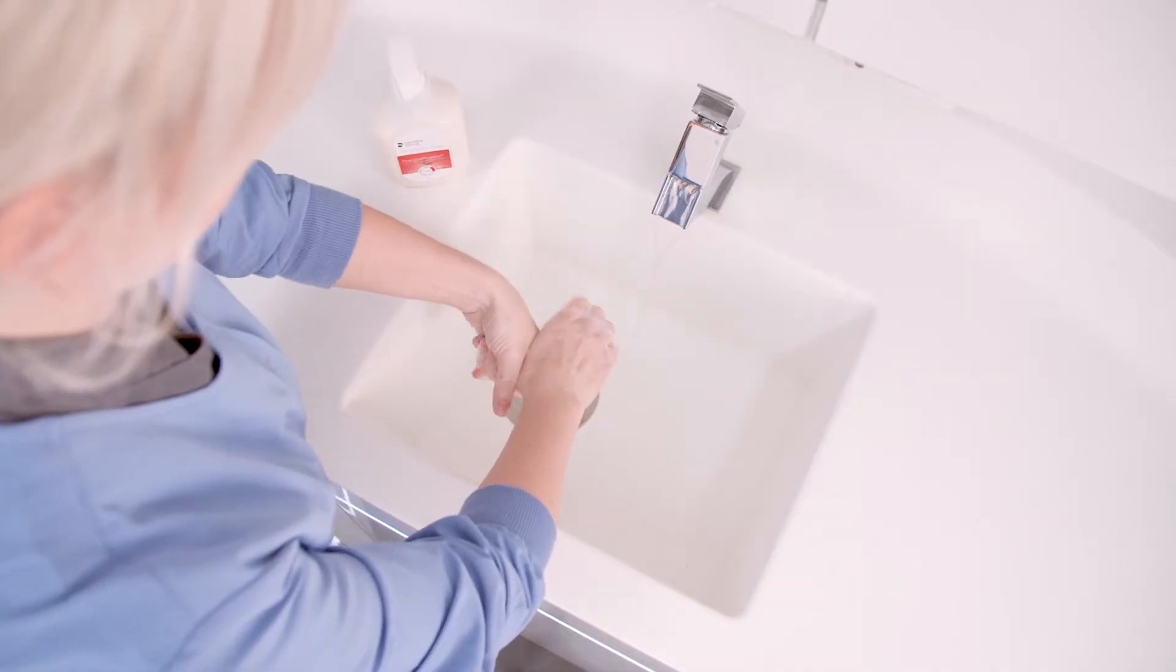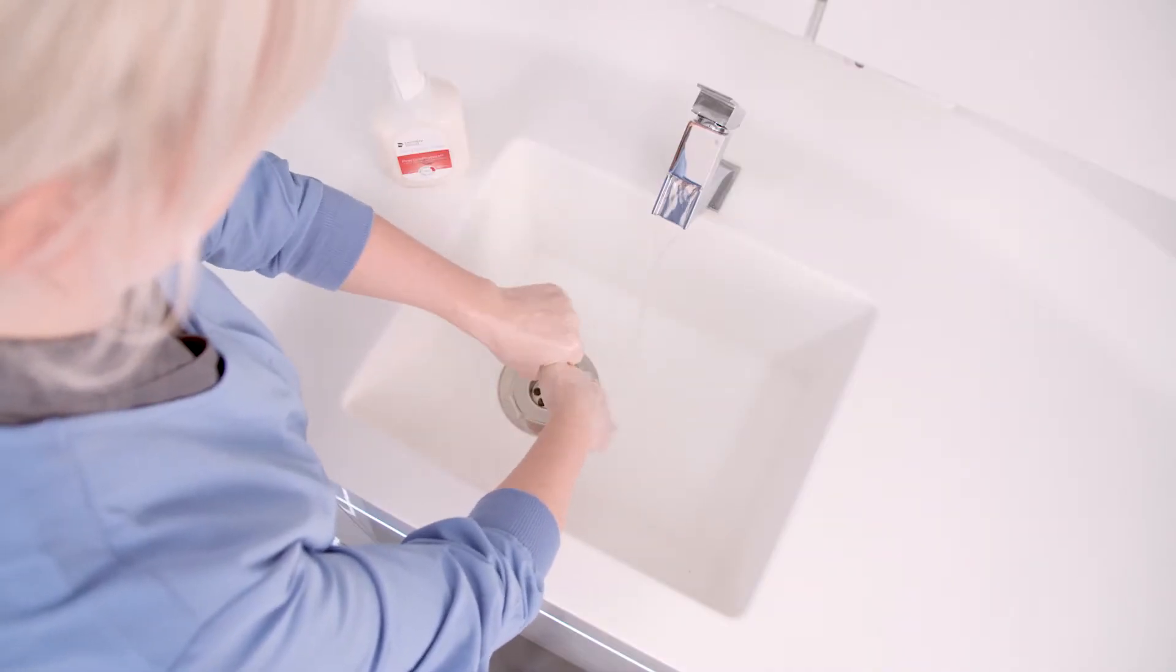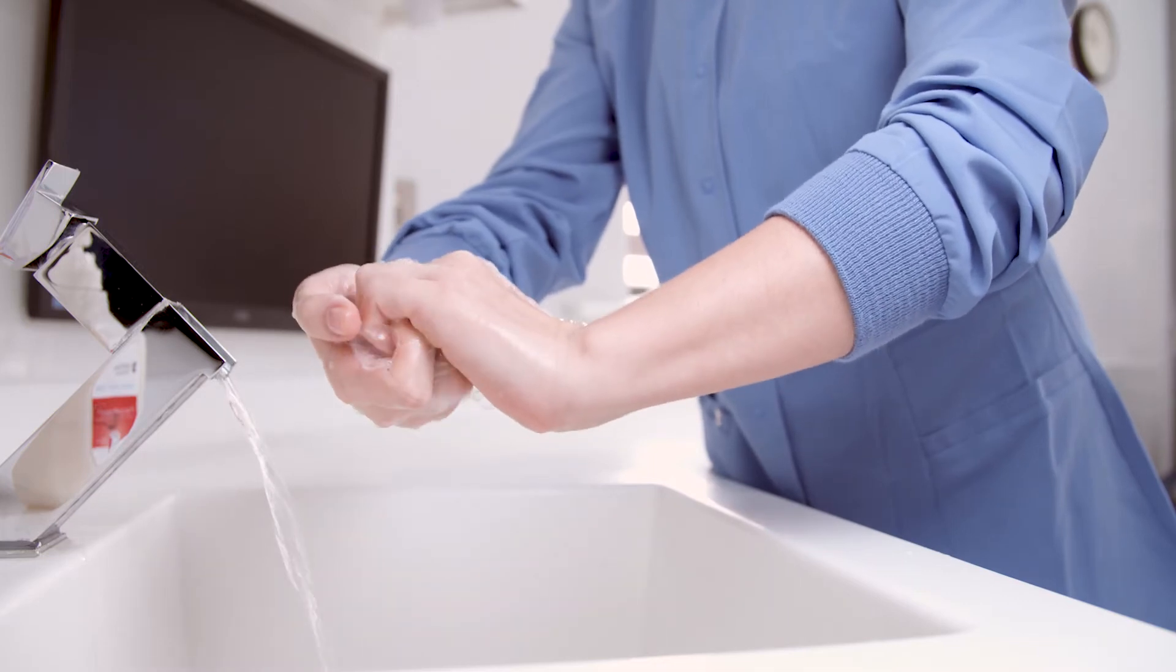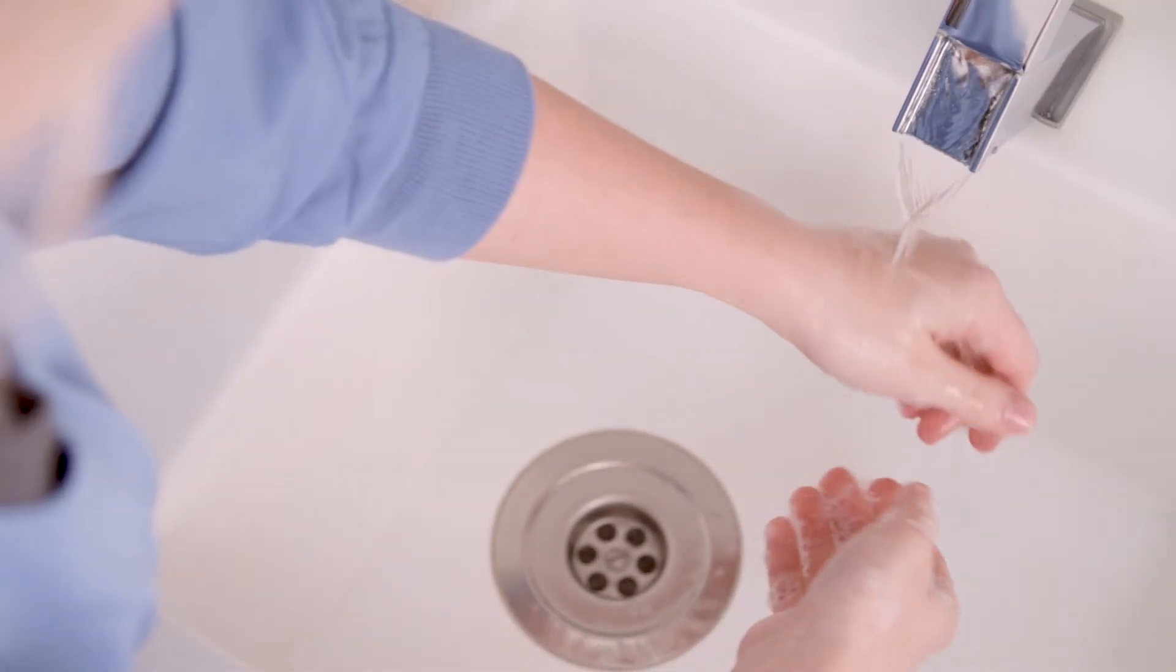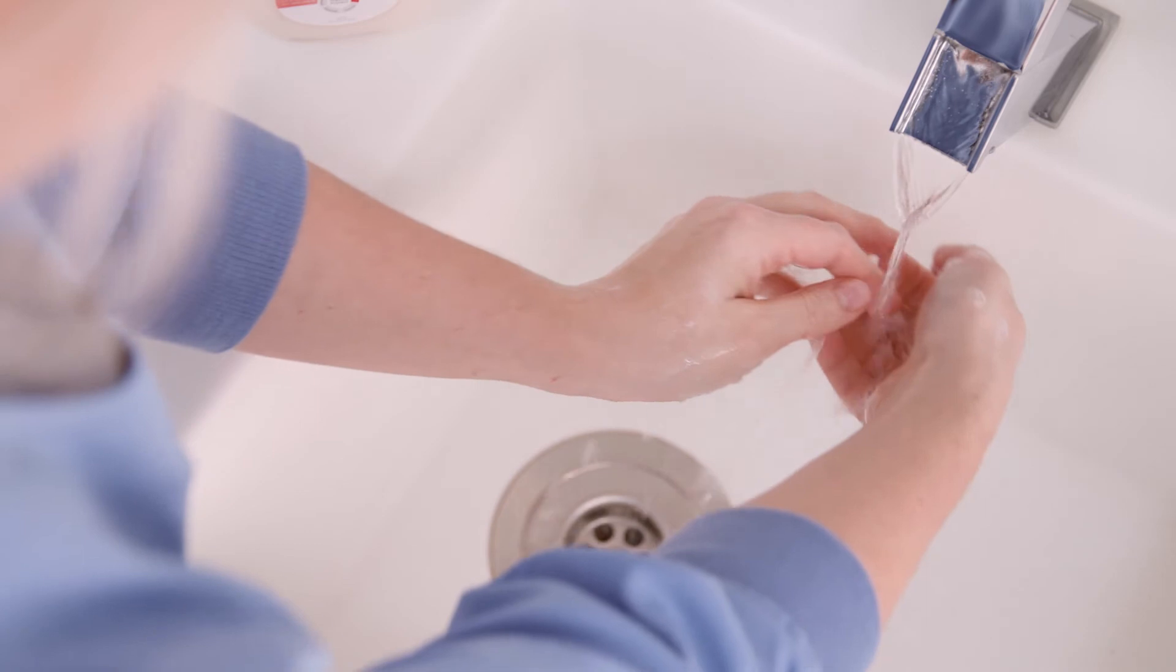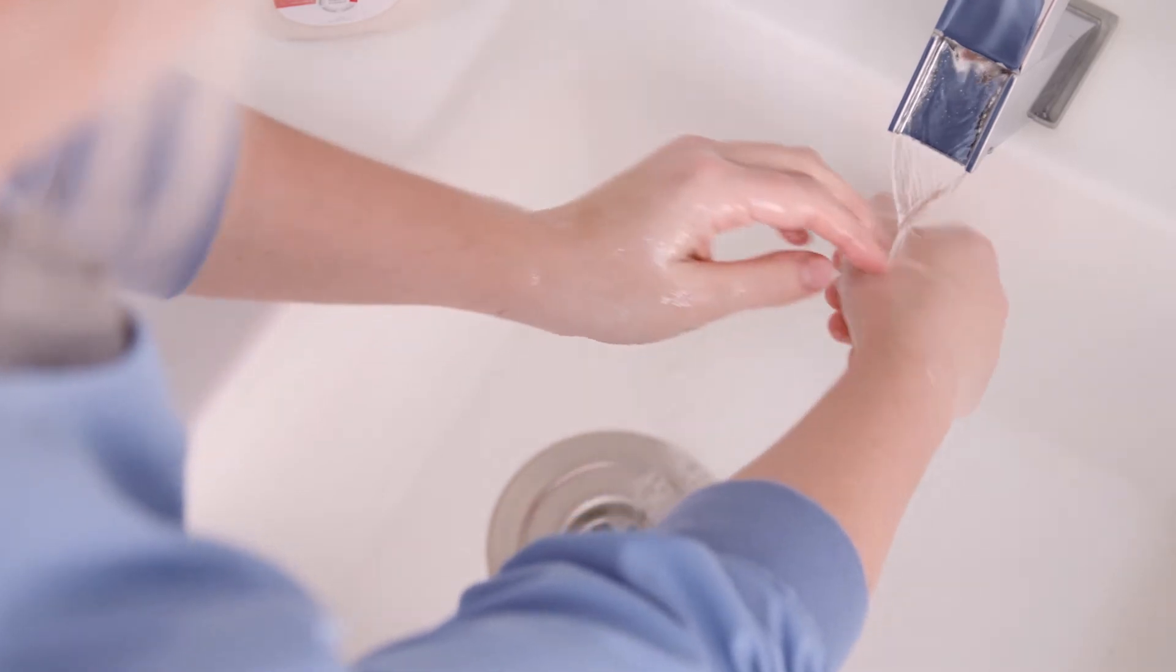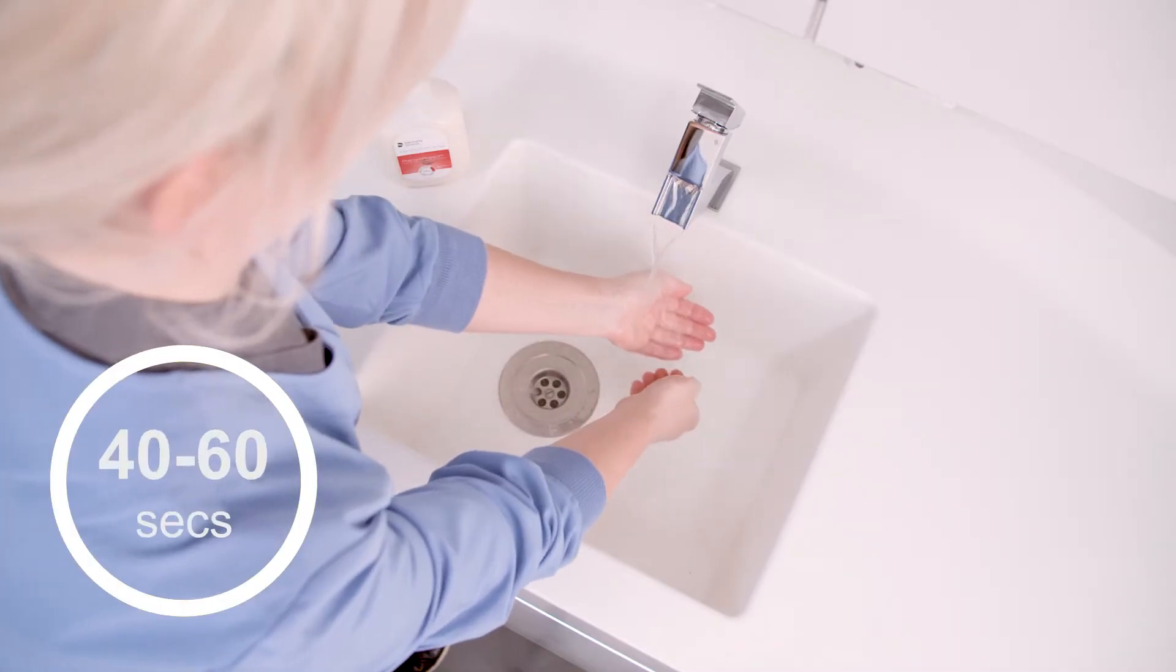Rub soap in and around thumb, rub soap on fingertips and under fingernails, rinse with water and towel dry. The hand wash procedure should take place for a minimum of 40 to 60 seconds.